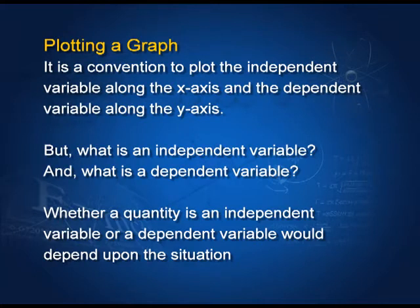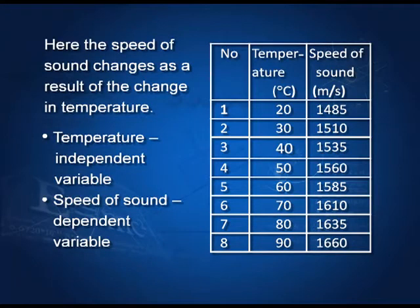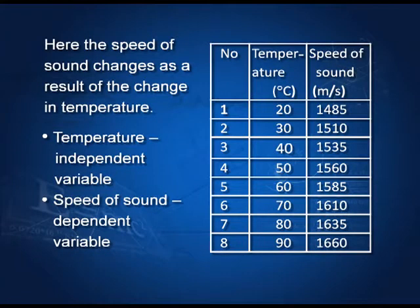For example, data from an experiment measuring the speed of sound in a certain material as a function of temperature shows that as temperature increases, the speed of sound also increases. The change in the speed of sound is a consequence of the change in temperature. Therefore, we designate temperature as the independent variable and the speed of sound as the dependent variable. But remember, temperature is not always an independent variable — it depends upon the situation.